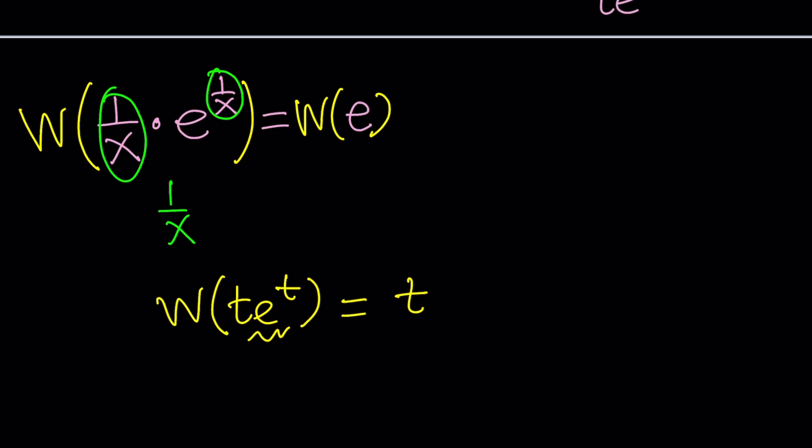we have 1 over x from here because it's t e to the t. Look at that. But what about this? What is w of e? We can make it nicer. How? You can write this as 1 times e and e is e to the power 1. Therefore,